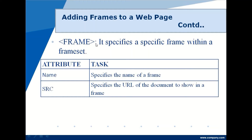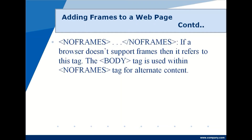The frame tag is used to specify a specific frame within a frameset. It has two attributes: name, which assigns a name to the frame, and src, which specifies the URL of the document to display in that frame. Since every frame displays a different web page, the src attribute is used to define which page loads in each frame.